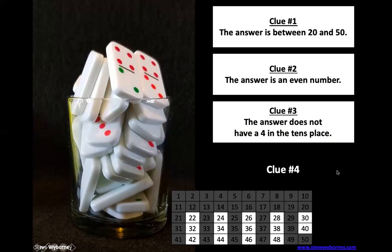If we look at the clue, the answer does not have a four in the tens place. So we should go ahead and cross out all these numbers here that have a four in the tens place. That takes us down to just nine numbers. If you had guessed the number 42 and we just crossed it out, go ahead and update your estimate based on the new information we have.